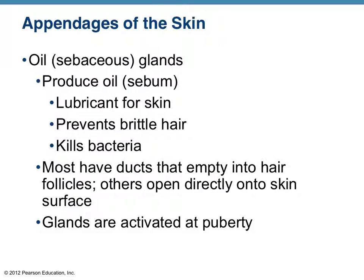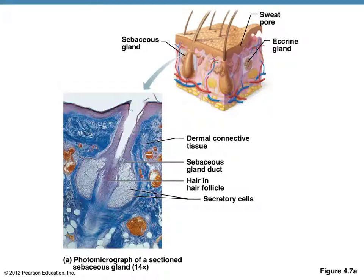The first type of gland is called an oil gland or a sebaceous gland. Oil glands produce a particular type of oil in the skin called sebum, and it has three pretty important functions for the skin. Most of these oil glands are activated in humans at puberty. Sometimes they're overactive and produce oily skin; if they aren't active enough, we have a condition called dry skin. Sebaceous glands typically open to hair follicles, and here you can take a look at the oil gland itself in an actual photomicrograph.